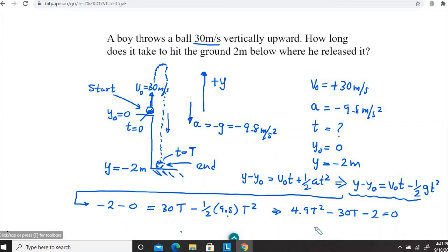I'm going to substitute the values. Y is minus 2, minus y naught is zero, equals v naught is plus 30, and t is the time we need to figure out. At the starting point t equals zero.